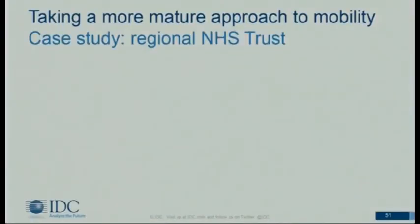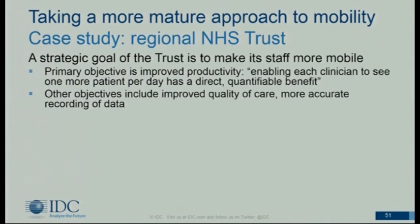The second example is one of the regional NHS trusts. Again, it's using mobility for a strategic reason rather than tactical. In this case, the strategy is to get more budget, and the way it's doing that is by increasing the productivity of its clinicians. If you can use mobility to enable clinicians to see one more patient per day, that translates directly into ROI which you can take back to your budget source as evidence that you're spending the money well. It also has other objectives — less easily quantified — like improving quality of care and making data recording more accurate, because you do it on-site in real time rather than trying to remember later.